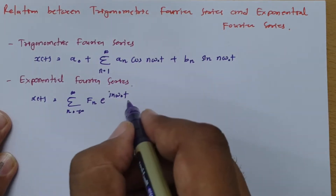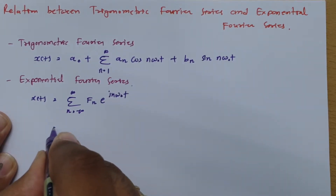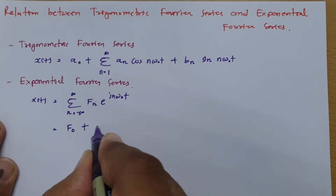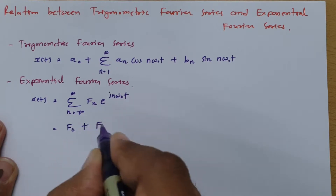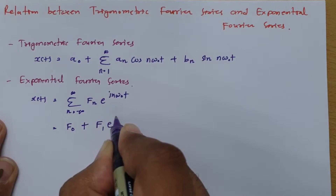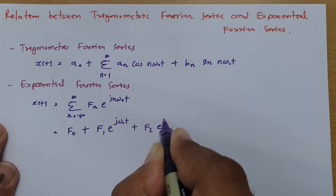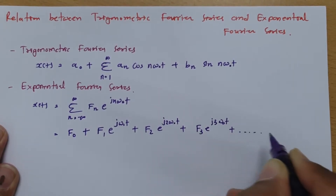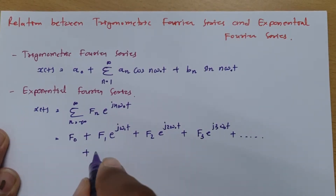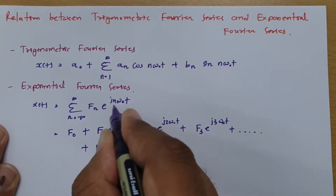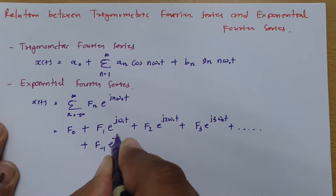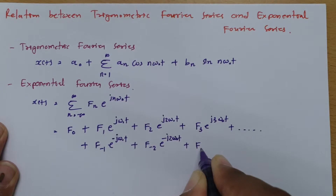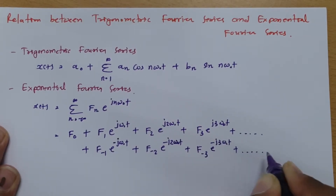To derive the relation, I will expand this exponential Fourier series first. So f0·e^0 = 1, so f0 is written separately. For the positive range, we get f1·e^(j·omega_0·t) + f2·e^(j2·omega_0·t) + f3·e^(j3·omega_0·t) up to infinity. For the negative range starting from n = -1, we get f(-1)·e^(-j·omega_0·t) + f(-2)·e^(-j2·omega_0·t) + f(-3)·e^(-j3·omega_0·t), continuing to negative infinity.